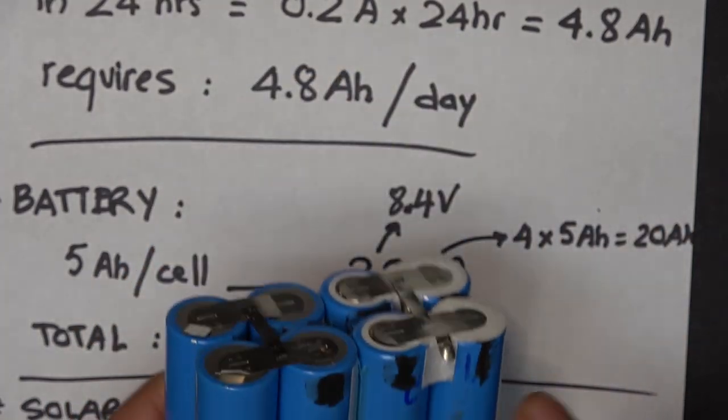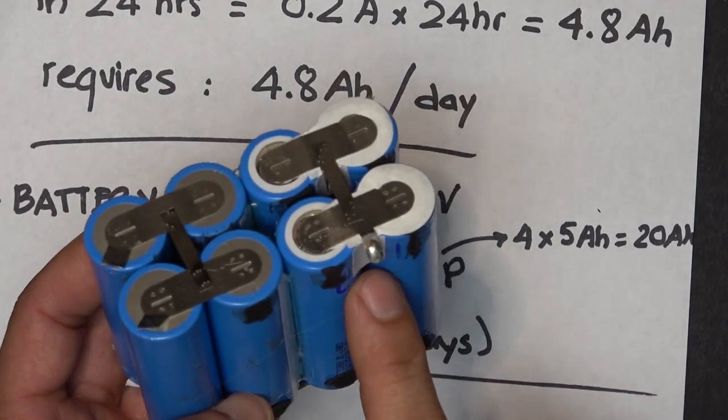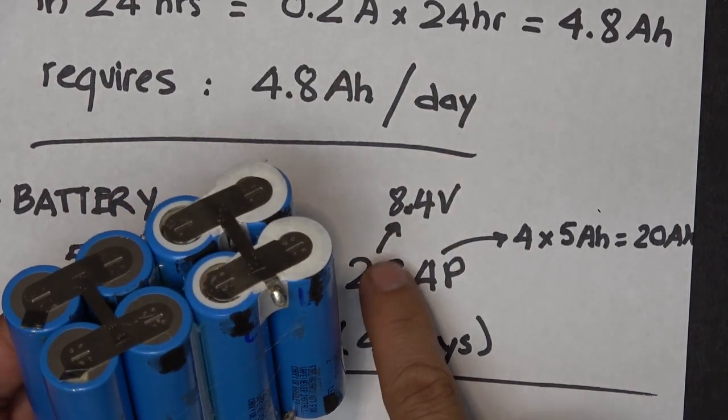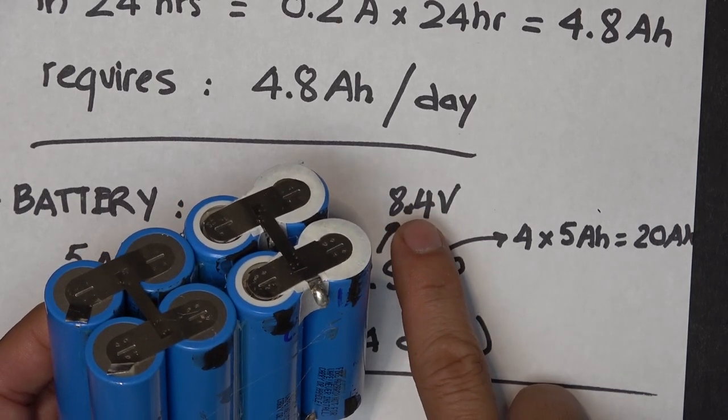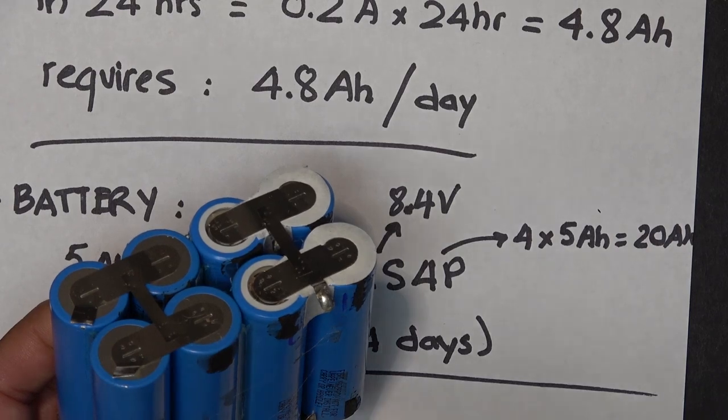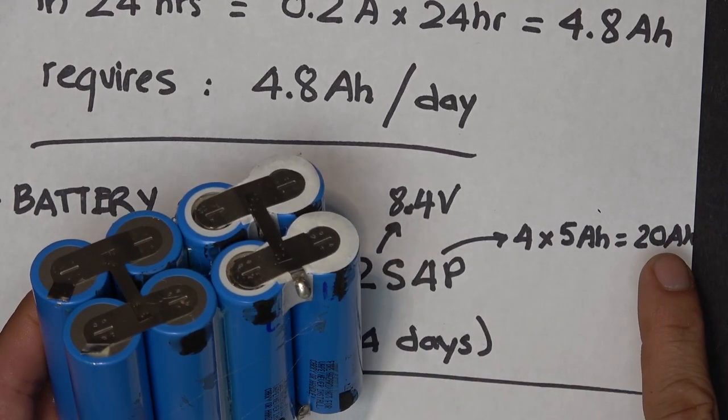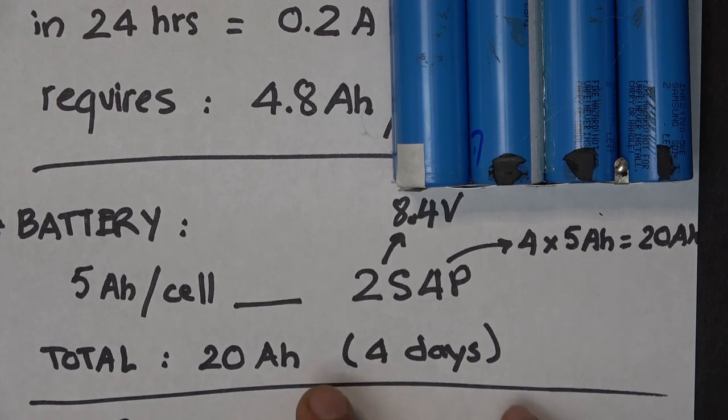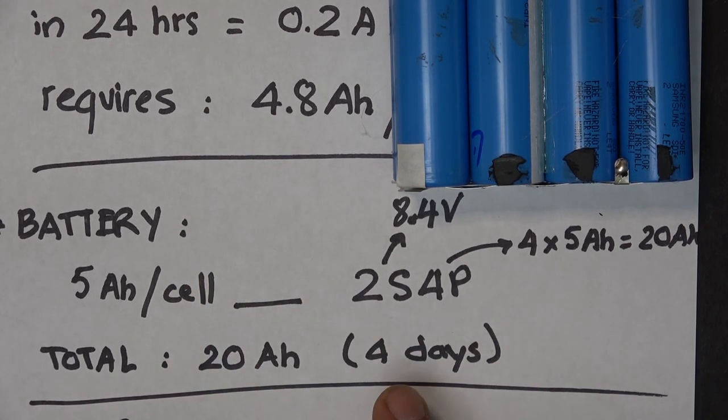Here is my battery. Each cell is 5 amp hours and it is connected in a 2S4P configuration - 2S because I need it to be over 6 volts, in this case 8.4 volts to power the controller. I put four in parallel so the total is 20 amp hours. So this battery is enough to power the controller for at least four days.